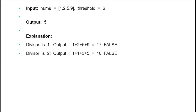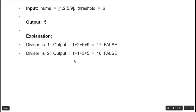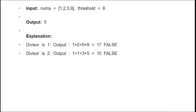We increment the divisor to 2. Dividing the array elements: 1÷2=0.5 rounded to 1, 2÷2=1, 5÷2=2.5 rounded to 3, 9÷2=4.5 rounded to 5. The final sum is 10, which is greater than 6, so even with divisor 2 the condition is not satisfied.